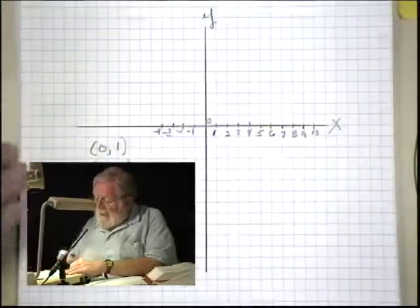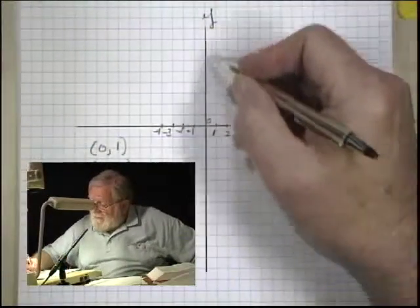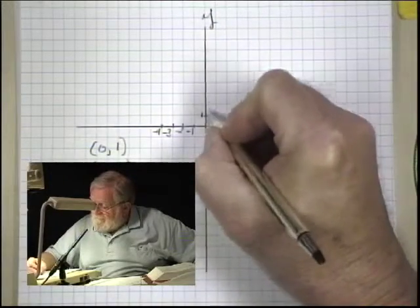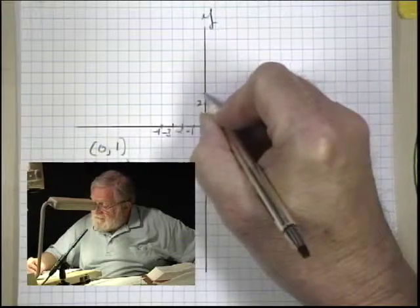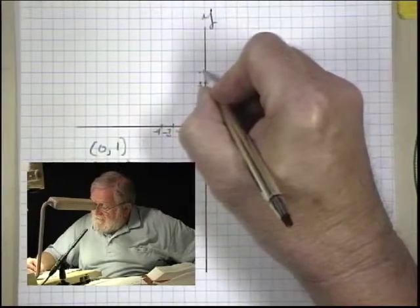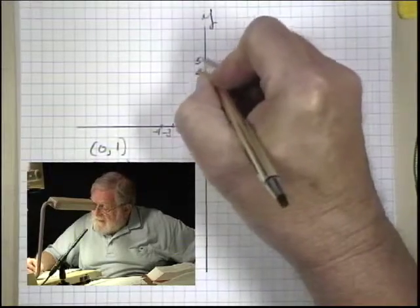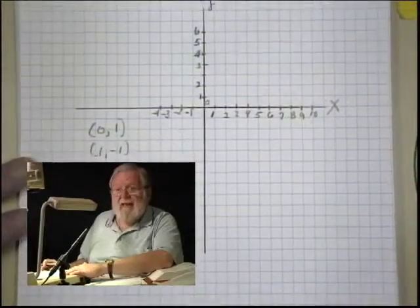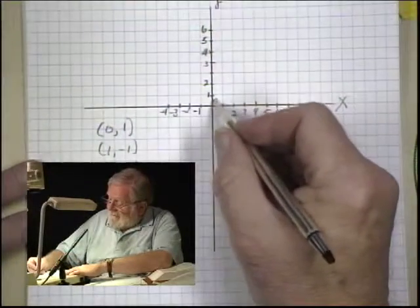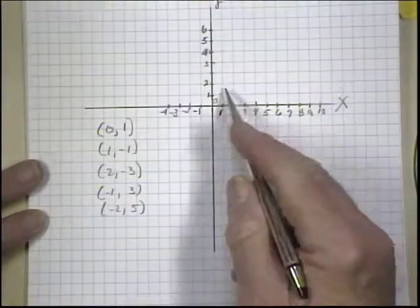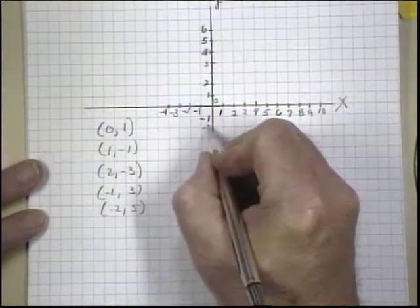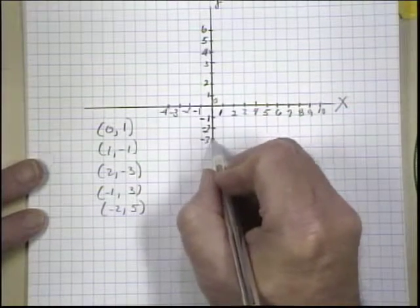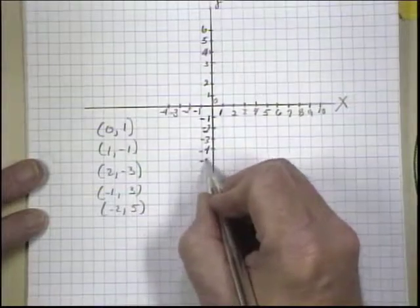And on my y-axis, as I go up from the 0 on the y-axis, I go in a positive direction. So this would be 1, 2, 3, 4, 5, 6. And that's as far as I'll take it. If I need to, I can add as I'm graphing. And then if I go below the 0 on the y, I go into negative territory. So I have minus 1, minus 2, minus 3, minus 4, minus 5.